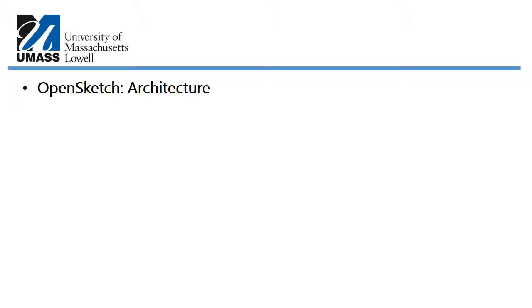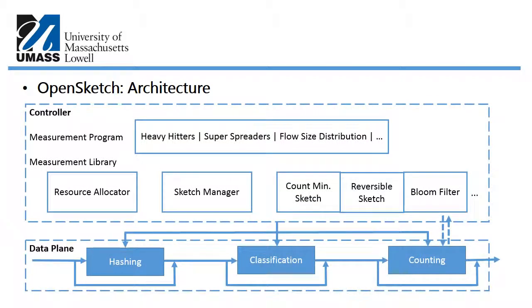In terms of architecture, OpenSketch is divided into a controller plane and a data plane. The data plane consists of the hashing stage, classification stage, and counting stage. The controller plane contains a measurement program — which holds algorithms for heavy hitter detection, super spreader detection, and flow size distribution — and a measurement library containing the resource allocator, sketch manager, and sketches such as the count-min sketch, reversible sketch, and bloom filter. The controller periodically queries the accounting table, which reports back its statistics.